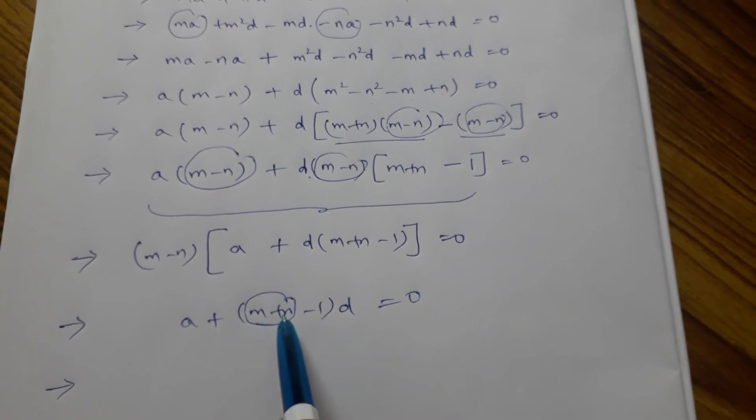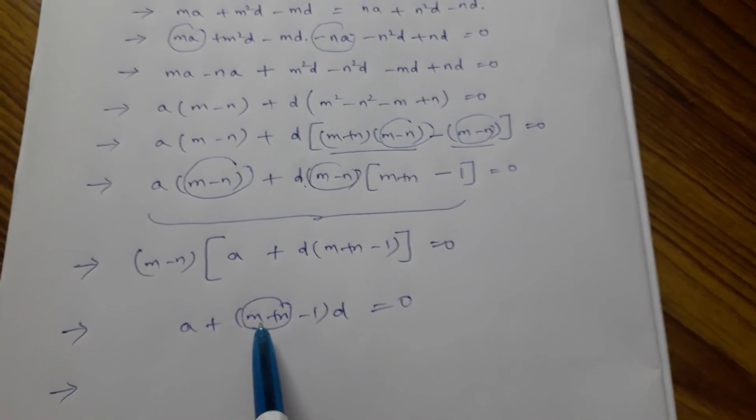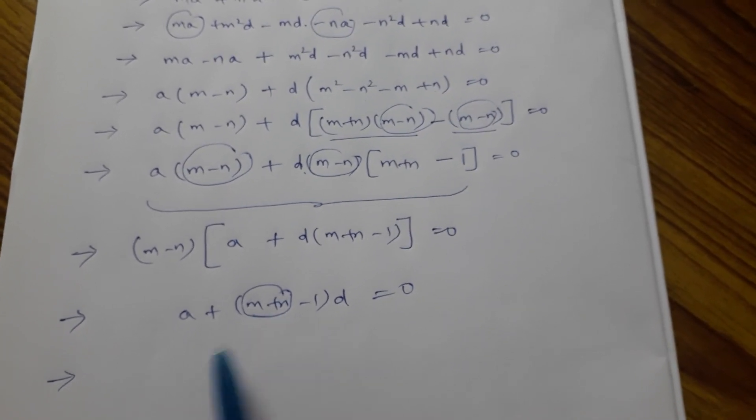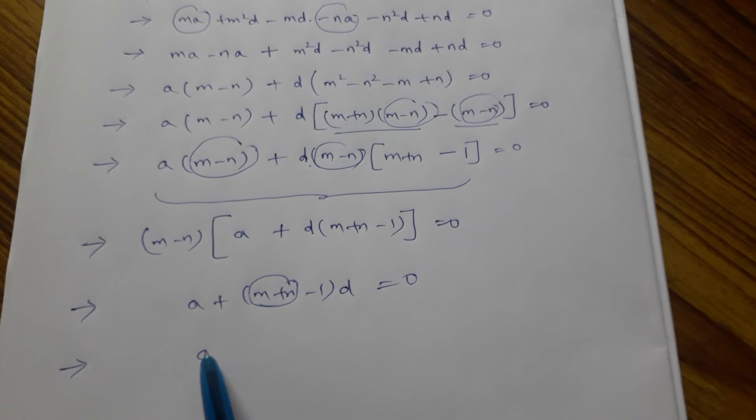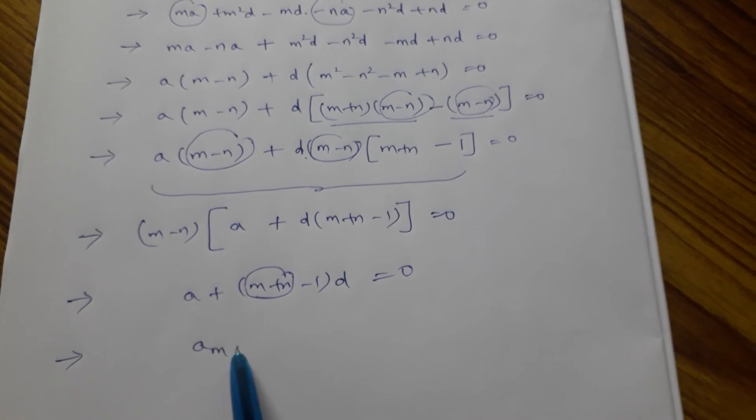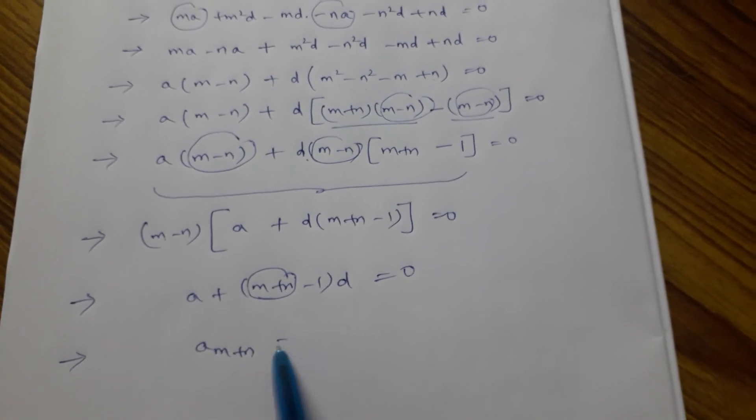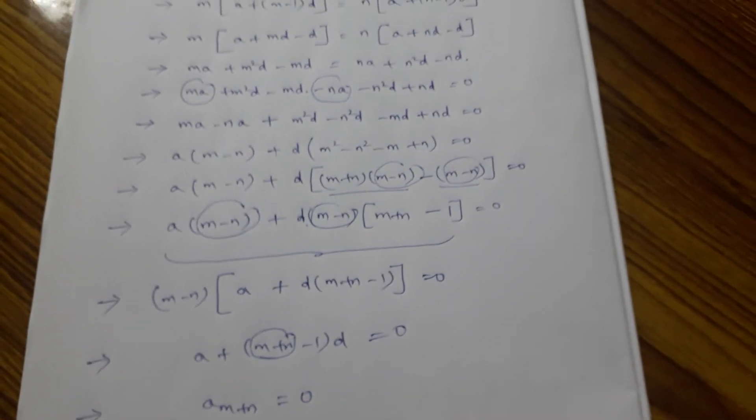Here, in place of n in the general term, we have (m plus n). So a plus (m plus n minus 1) into d is the (m+n)th term, which equals 0. Hence proved.